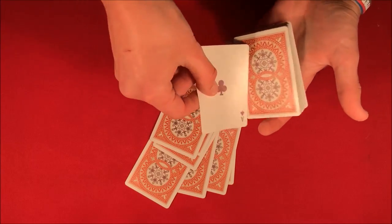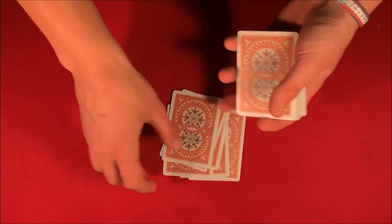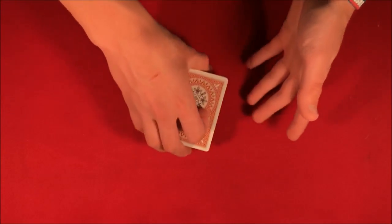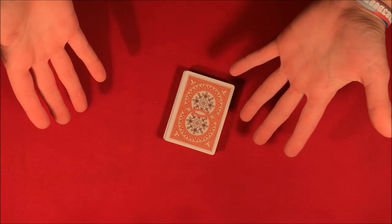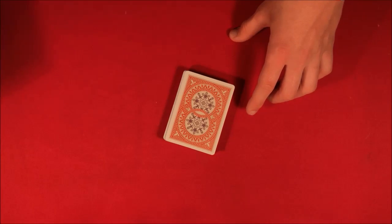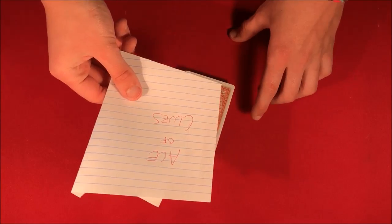In this case it's the ace of clubs. So the spectator chose whatever number they wanted between five and ten, they chose eight, and the spectator would put the card back in the middle of the deck. They could be shuffled up, but the whole point is that I've actually predicted the card you chose in the first place.